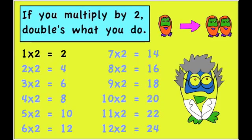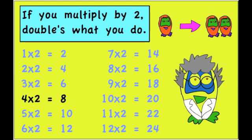One times two is two. Two times two is four. Three times two is six. Four times two is eight. Five times two is ten.